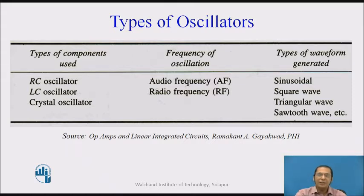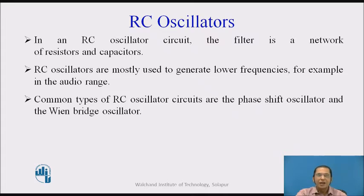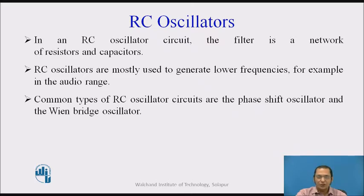Oscillators generate repetitive waveforms of fixed amplitude and fixed frequency — it can be sinusoidal, square, triangular, or sawtooth. The most popular type of oscillator used for audio frequencies is the RC oscillator, consisting of resistors and capacitors. RC oscillators are mostly used to generate low frequencies, for example in the audio range. There are two common types of RC oscillators: the first is called the phase shift oscillator and the second is called the Wien bridge oscillator.